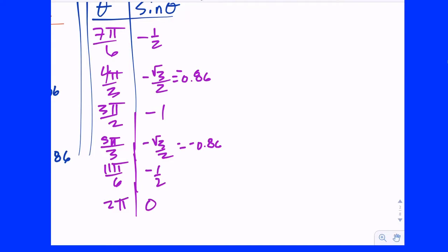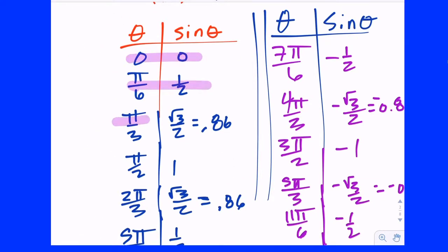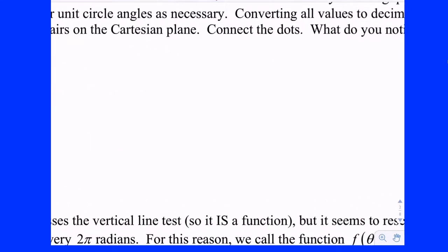Notice the symmetry — all the ratio values end up being the same. If I go around a second rotation and stop at all the same terminal angles, the sine ratios would be the same because coterminal angles have the exact same trig ratios. So if I can do it for one rotation from 0 to 2pi, I can transfer that to any other rotation. Let's go ahead and plot those points — we have a set of ordered pairs (theta, sine of theta) that we can plot on the coordinate plane. We need an x- and y-axis.